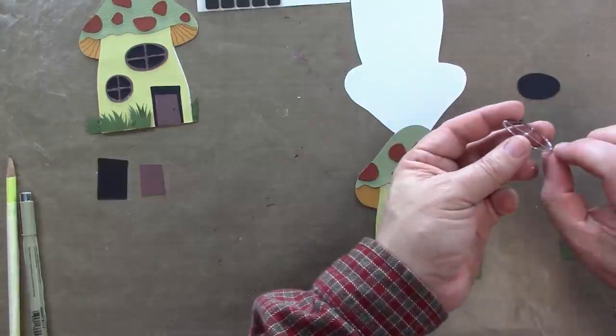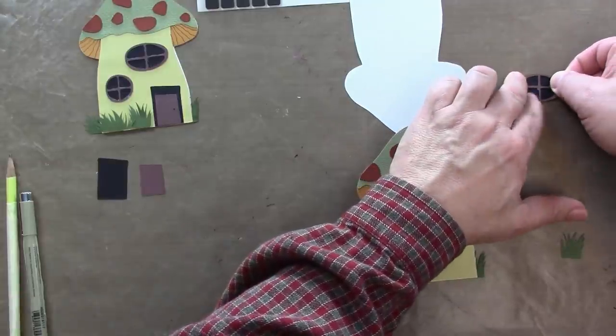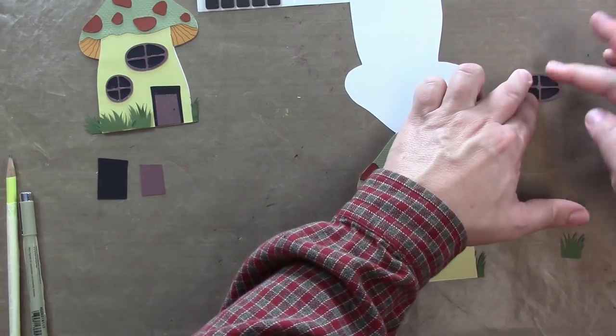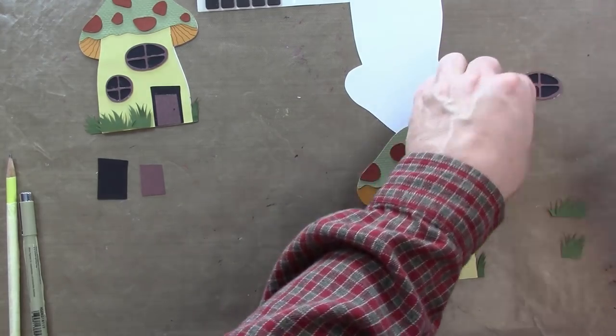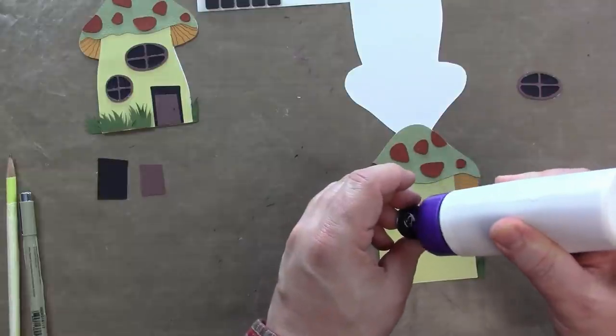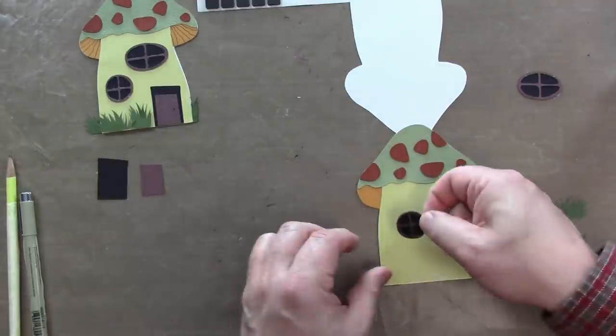Now it doesn't take that much adhesive. That's not a very big space, so be a little stingy there on the adhesive. Of course it'll dry clear. Now we're going to attach the windows to the stem.